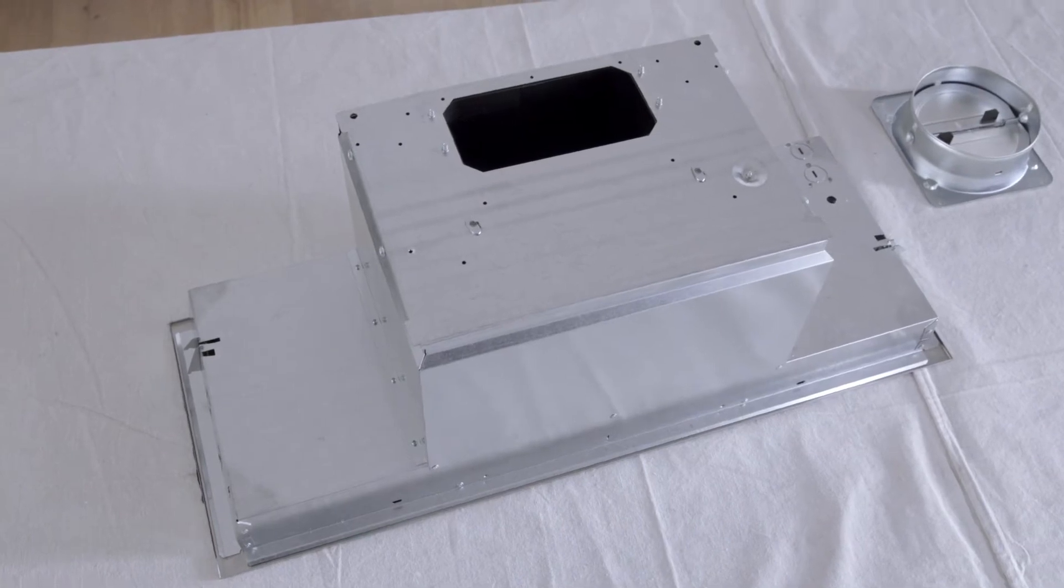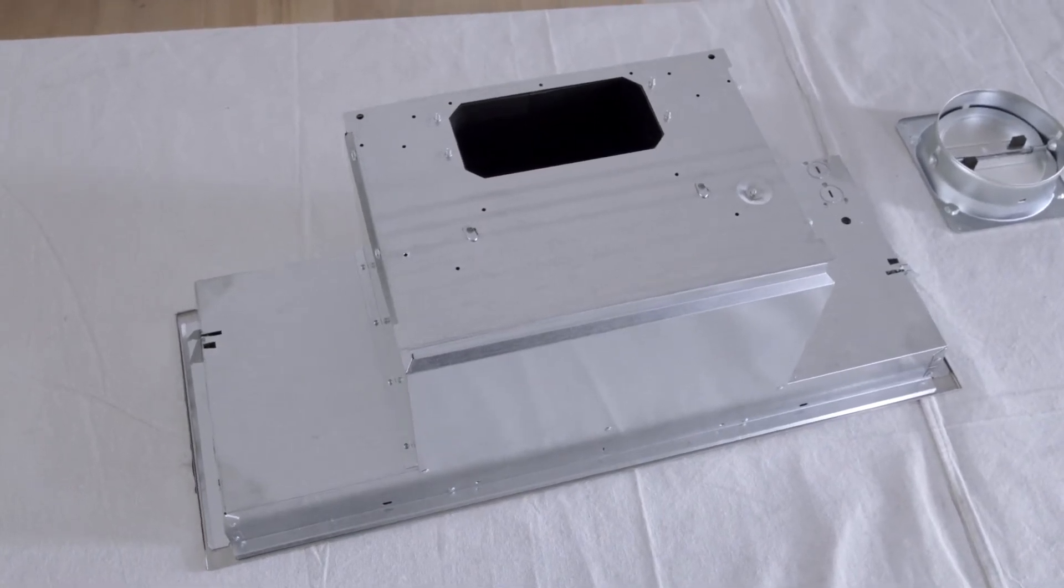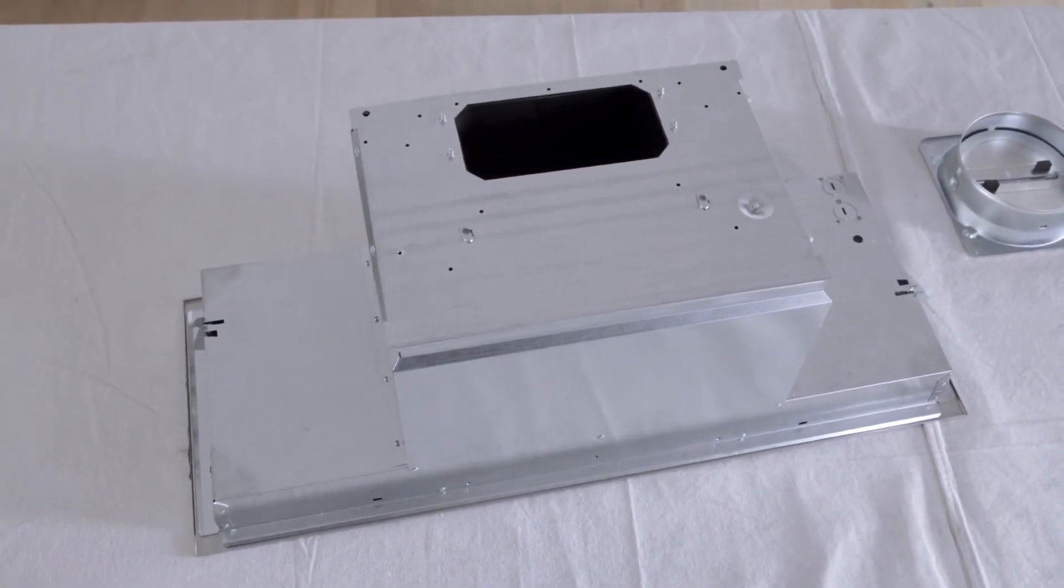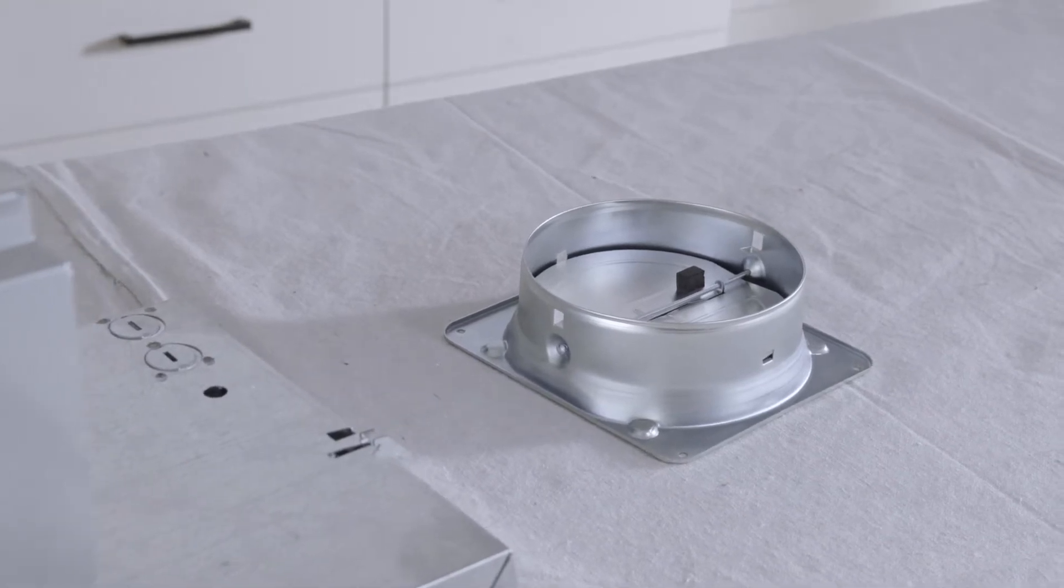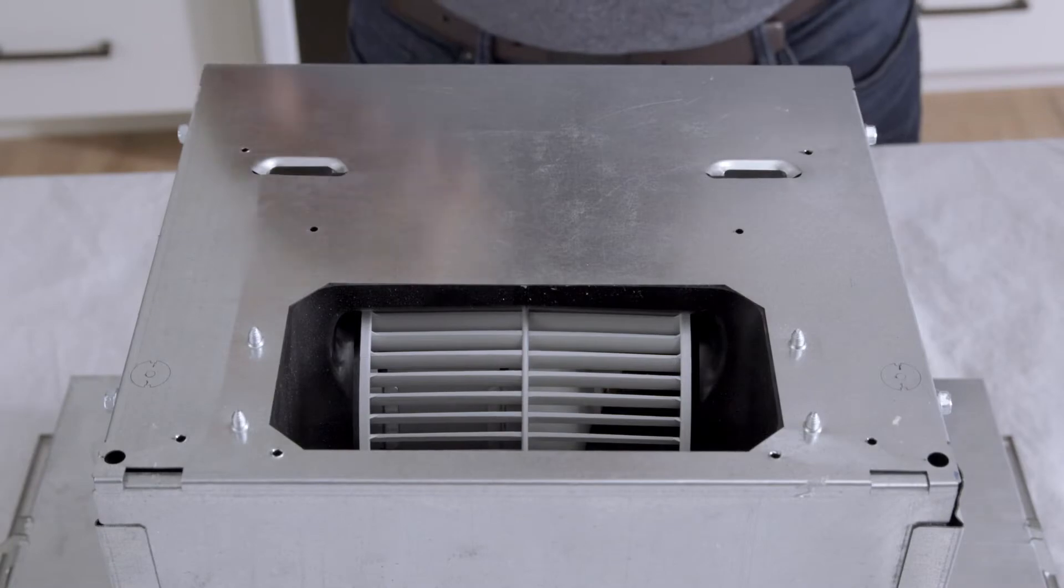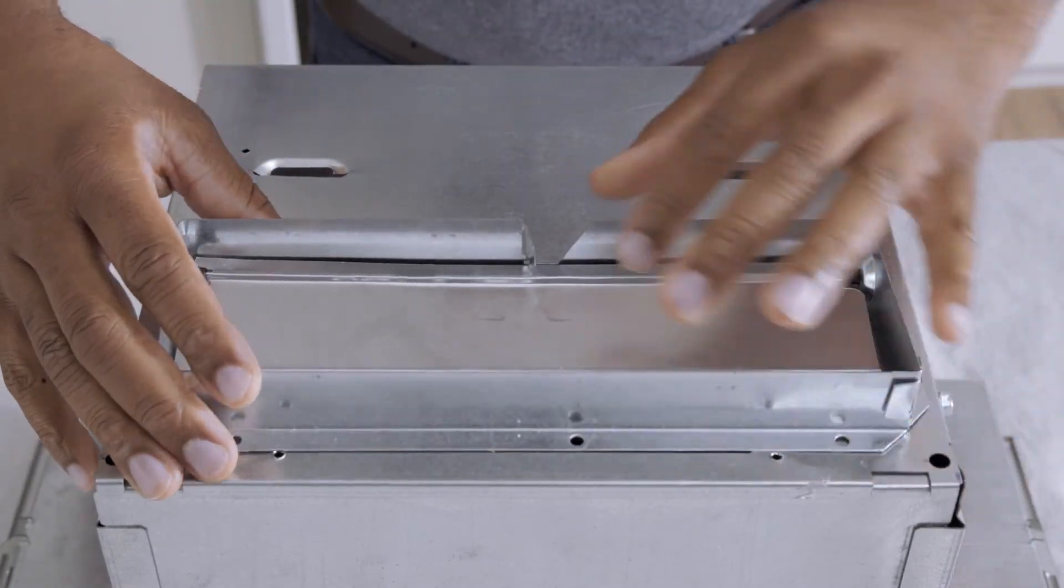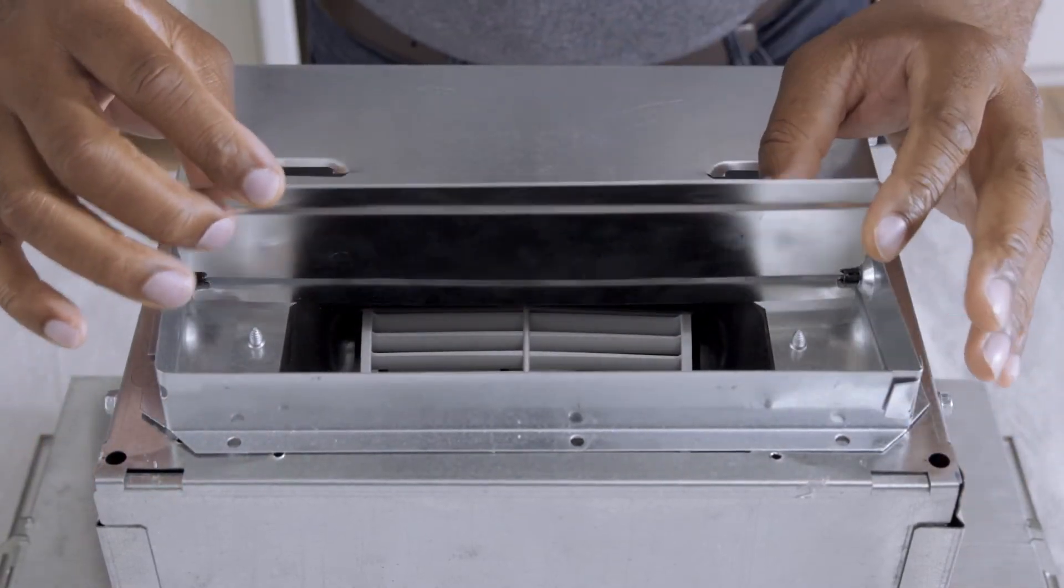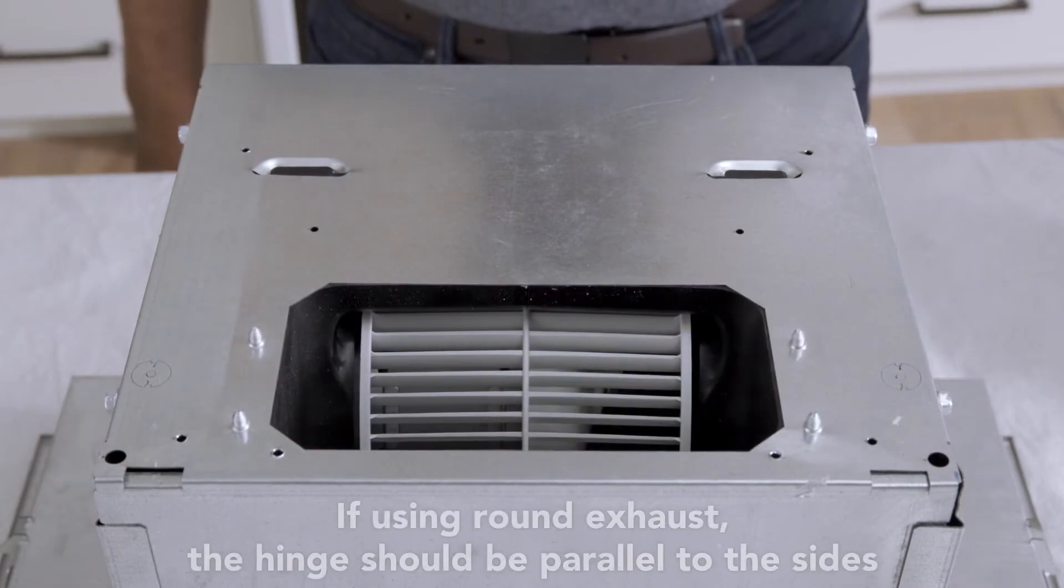The unit comes set up for vertical exhaust out of the box. For a vertical exhaust installation using round ducting, attach the appropriate damper assembly. Note the hinge position. If using the rectangular damper, the damper hinge must be toward the front of the unit.